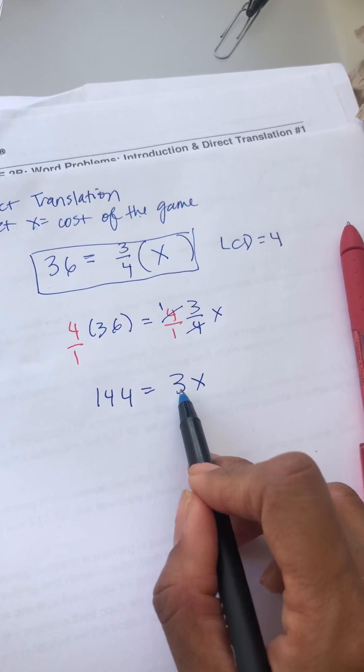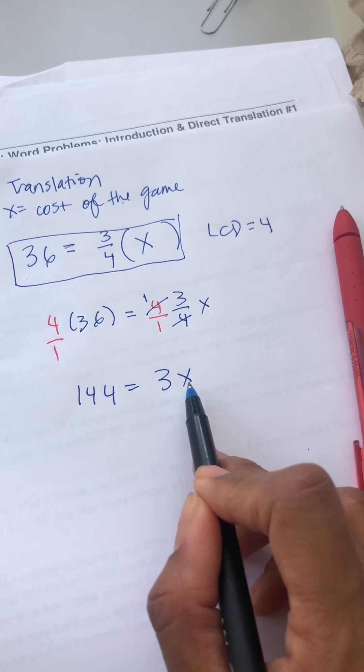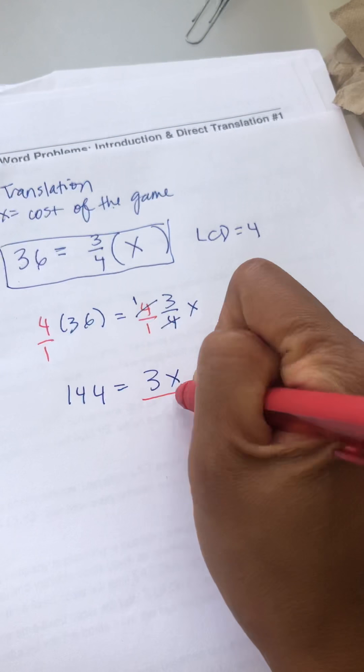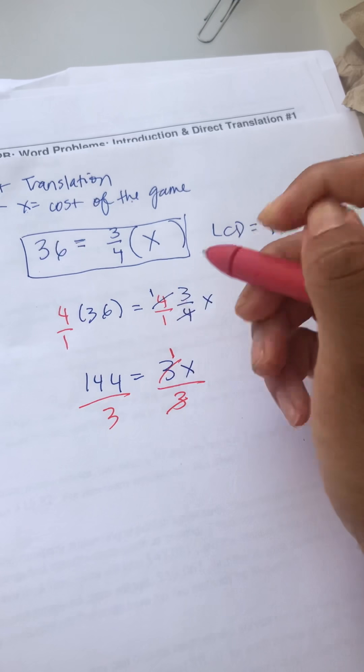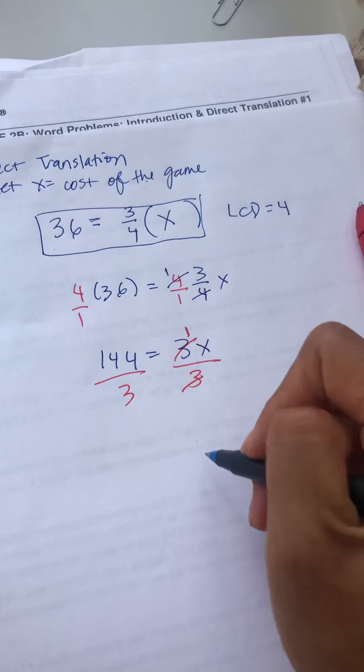So now that you simplified it, you're going to get rid of the three, the coefficient, by dividing both sides by three so that the coefficient now becomes a one, which is what we want. So as a result we get x is equal to 144.